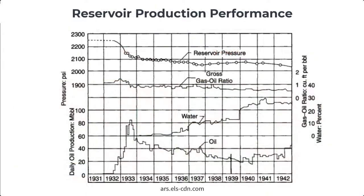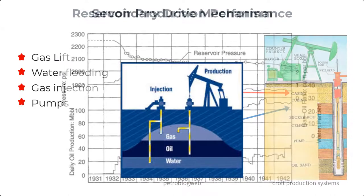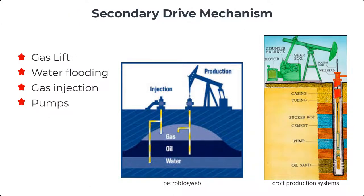If you plot your production profile you will be able to determine, to an acceptable level of accuracy, the type of drive mechanism that the reservoir has. We will talk more about this as we go on in this series. If secondary recovery technology is deployed, the reserve you can expect may increase to about 80%. Examples of secondary technology include gas lifts, water flooding, gas injection, and pumps such as ESP.